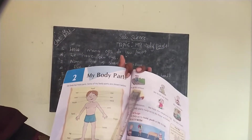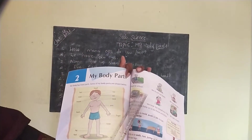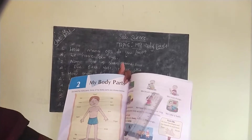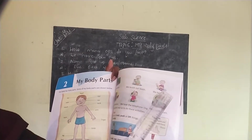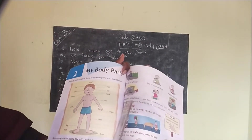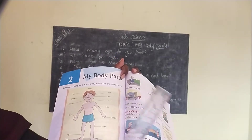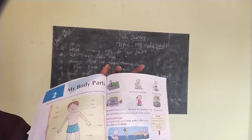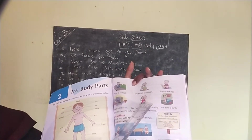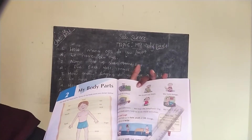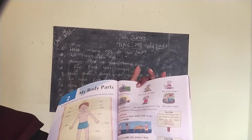And here, we can use our legs and hands to walk. Here, we use our hands to brush. And here, we can use our hands to hold things. We use our eyes to watch television or anything. Here, we can use our ears to hear the voice. And here, we use our hands to take a bath.